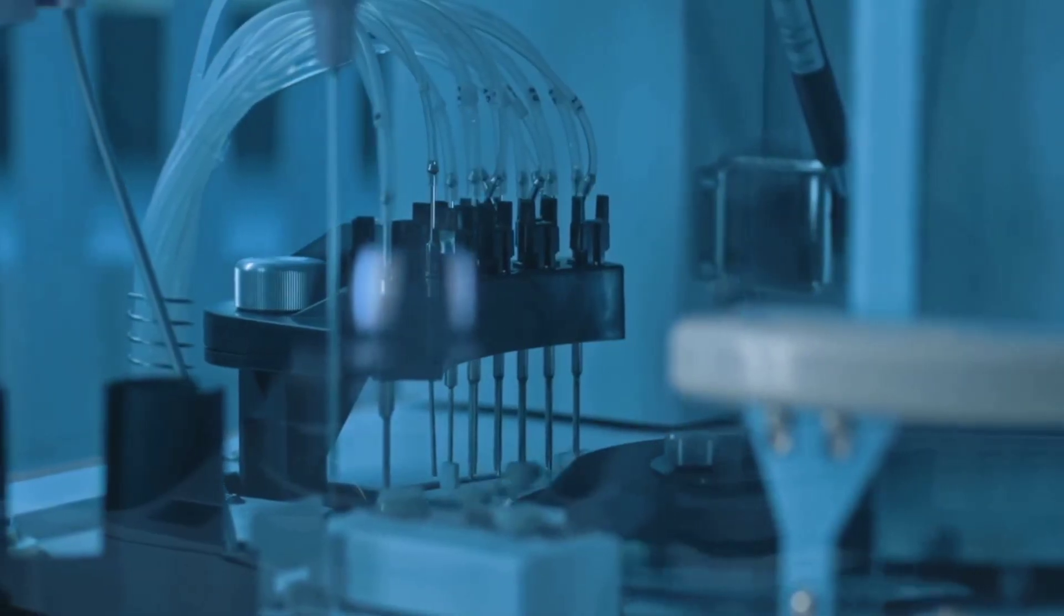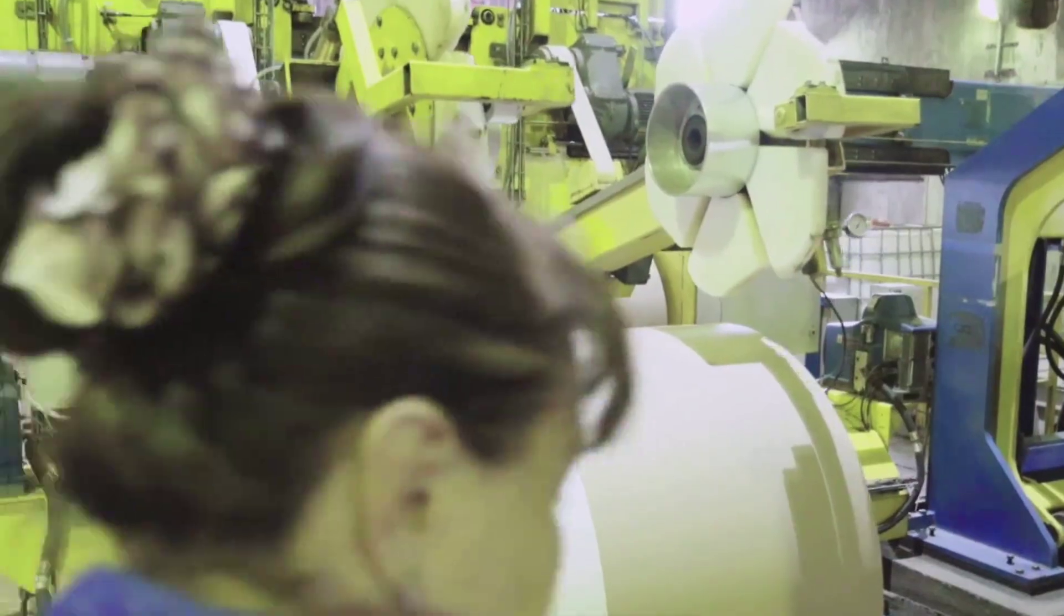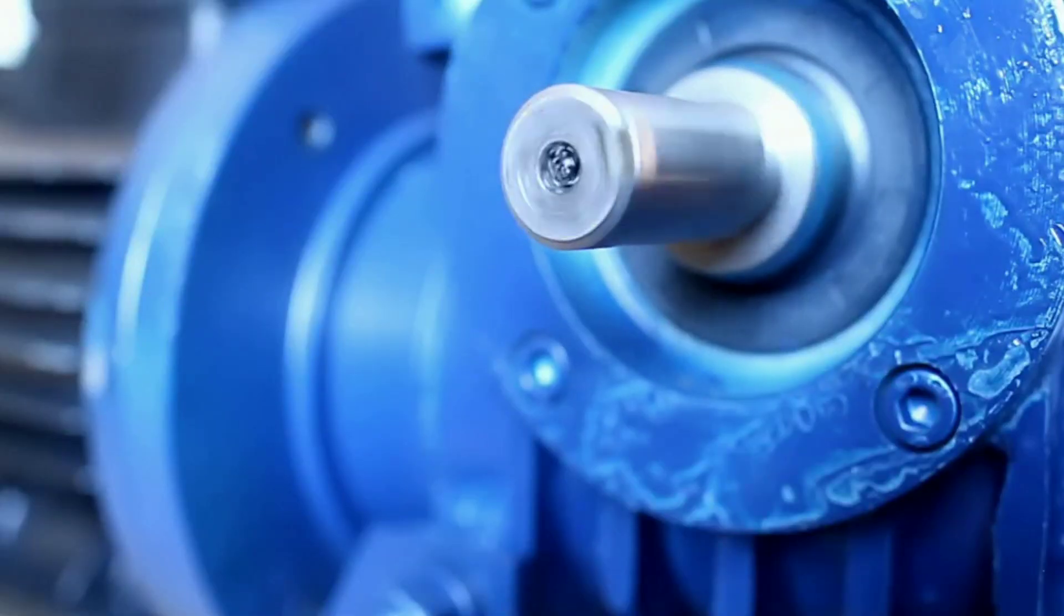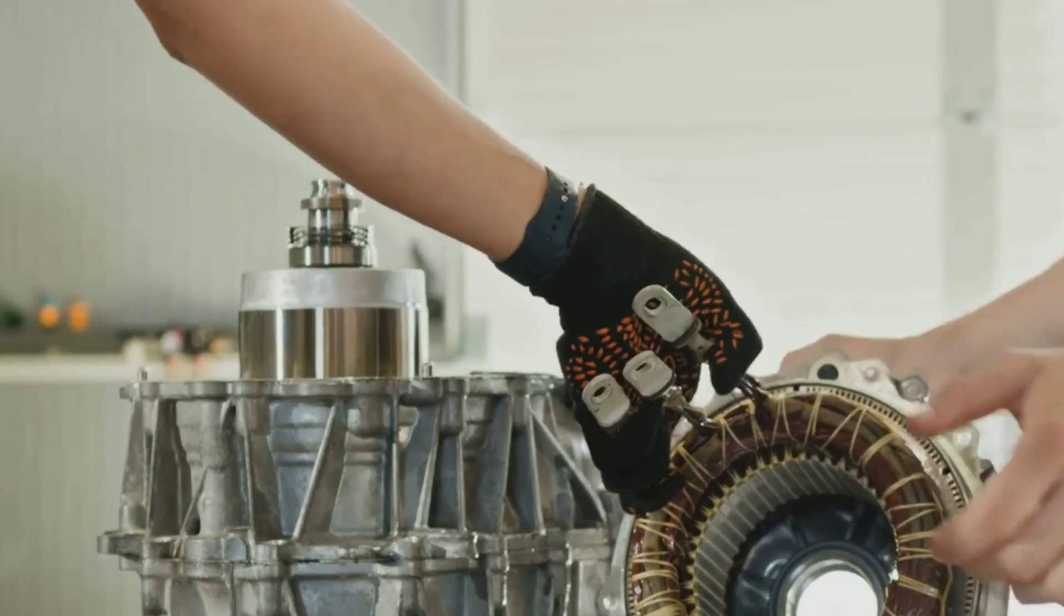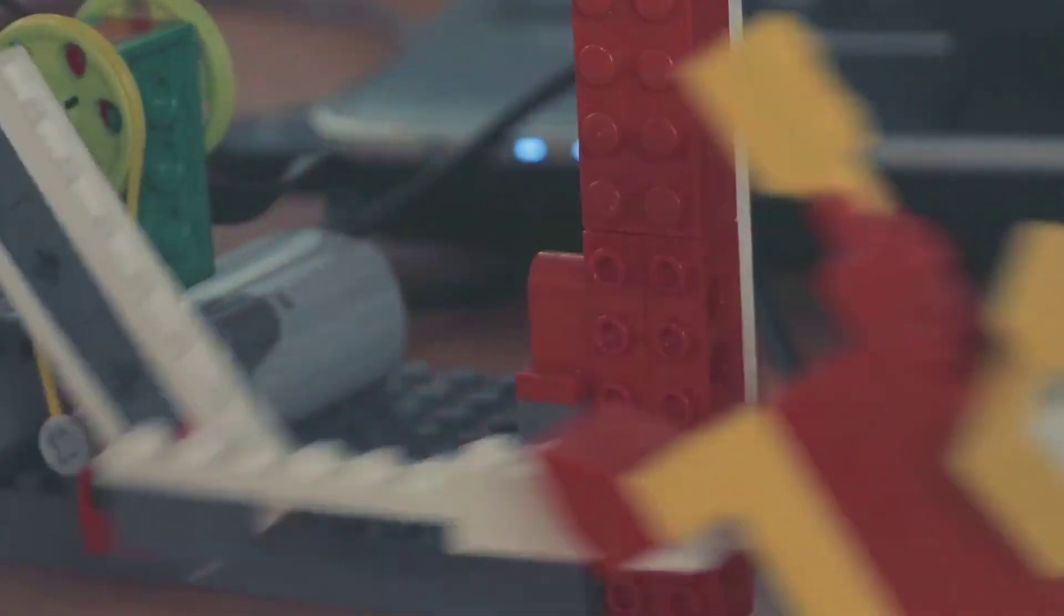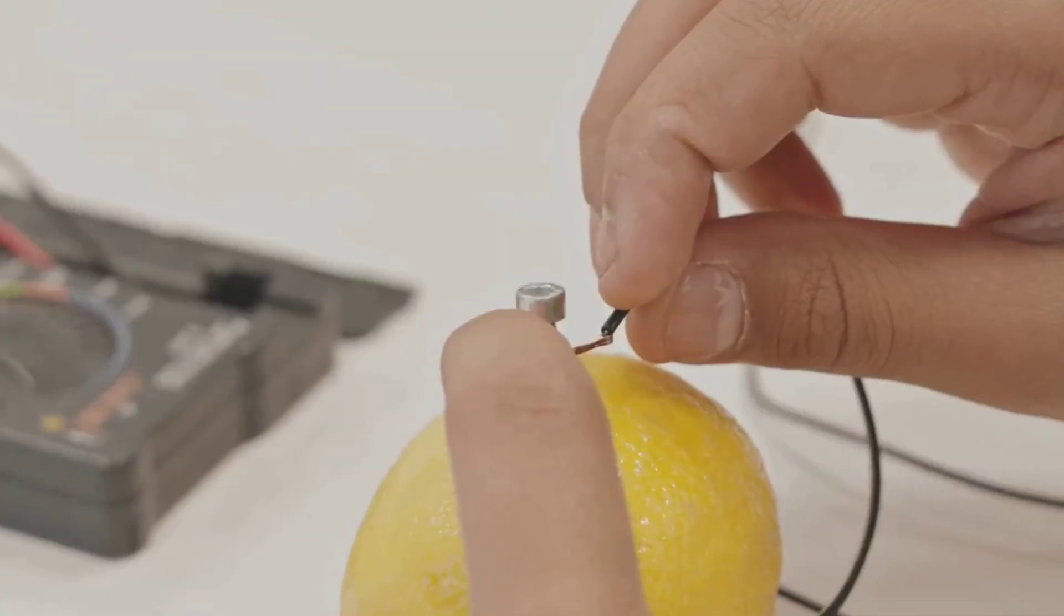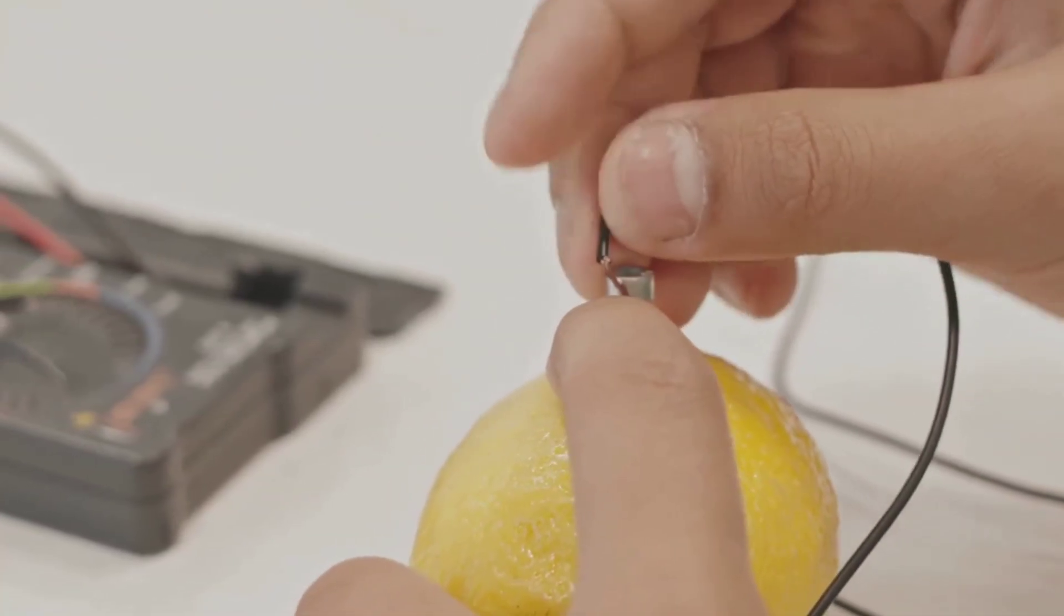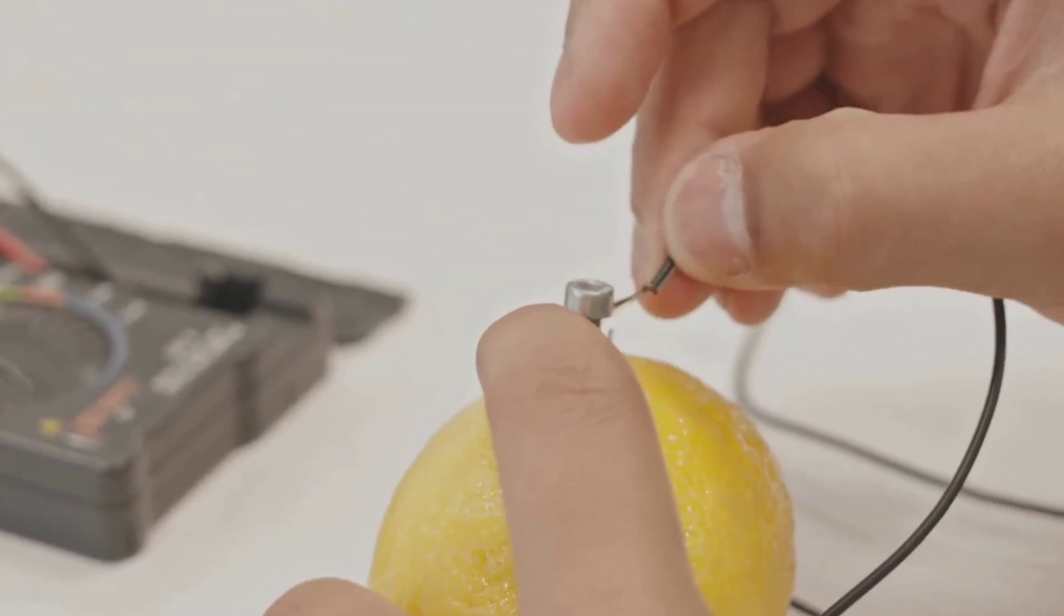Whether it's a tiny motor in a medical device or a large one in a conveyor belt, the same basic principles apply. Their simplicity and versatility make them a favorite for engineers and inventors. If it's battery-powered and moves, there's probably a DC motor inside. You can even build a simple one yourself with just a battery, a magnet, and a coil of wire.